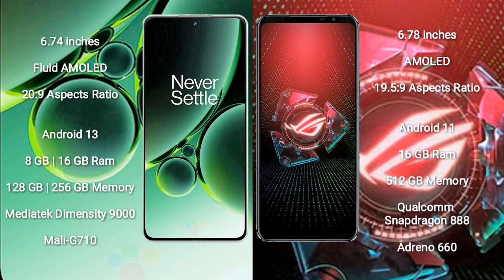OnePlus Nord 3 comes with 8GB or 16GB RAM and 128GB or 256GB internal storage, MediaTek Dimensity 9000 processor and GPU Mali-G710. ASUS ROG Phone 5 Pro comes with 16GB RAM and 512GB internal storage, Qualcomm Snapdragon 888 processor and GPU Adreno 660.